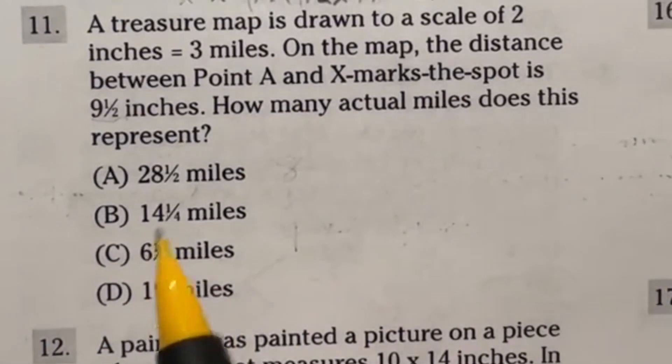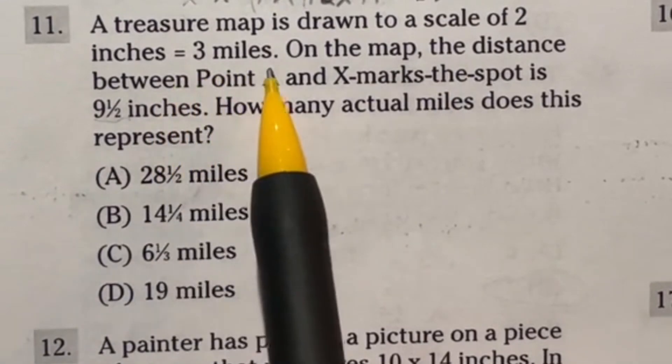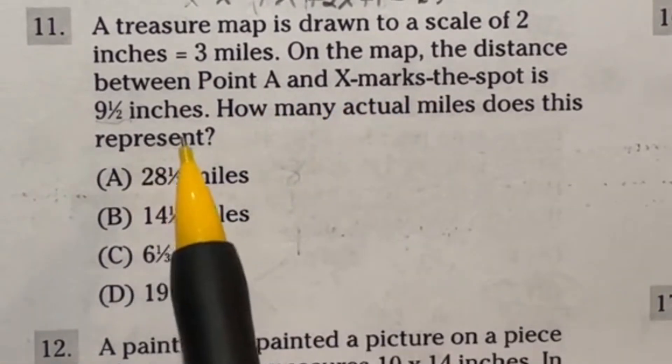Lots of ways to do number 11. Let's take a look at one of them. It says a treasure map is drawn to a scale of 2 inches equals 3 miles. On the map, the distance between Point A and X-marks-the-spot is 9½ inches. How many actual miles does this represent?